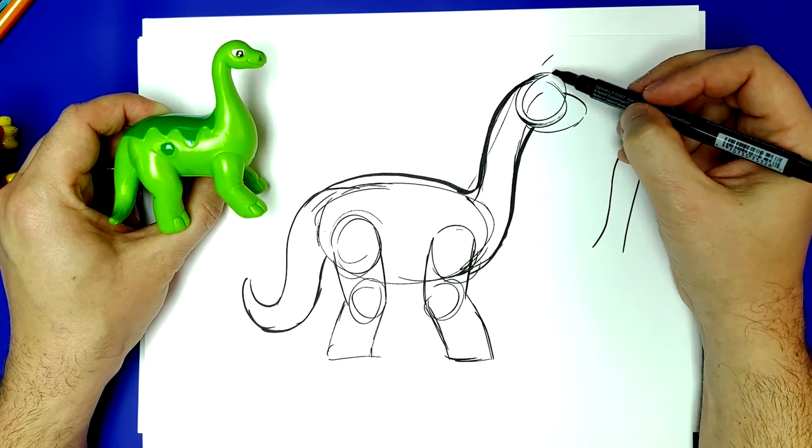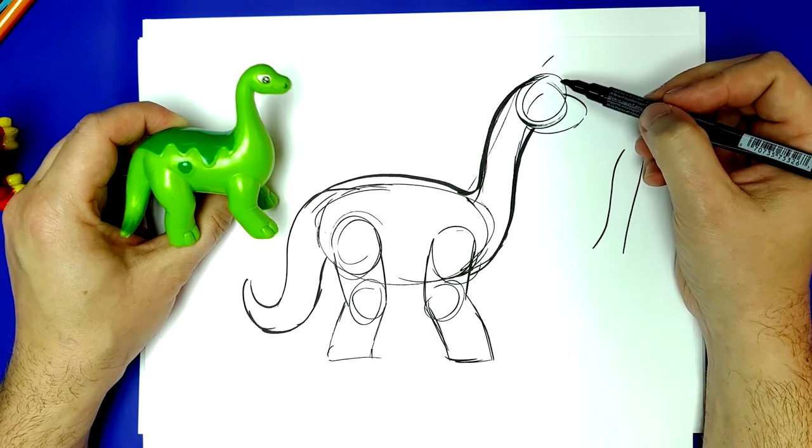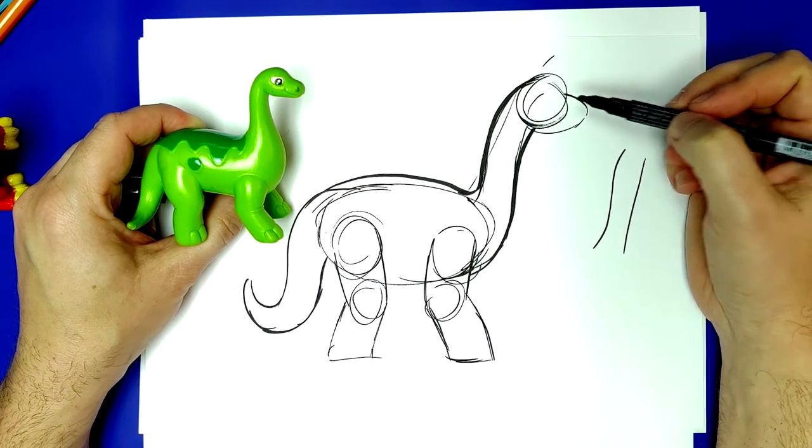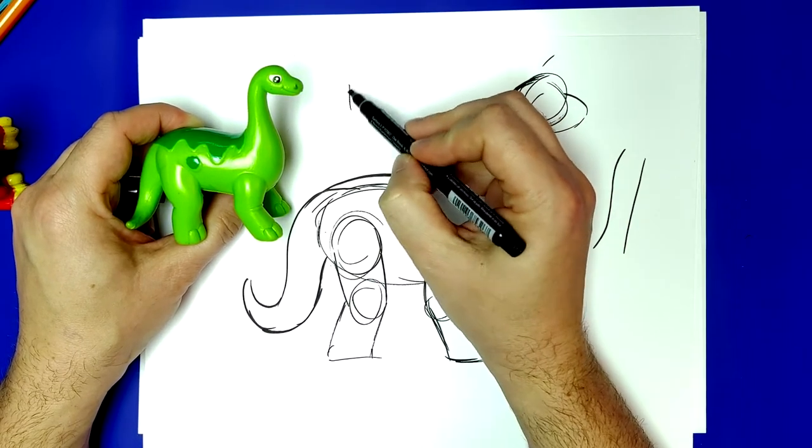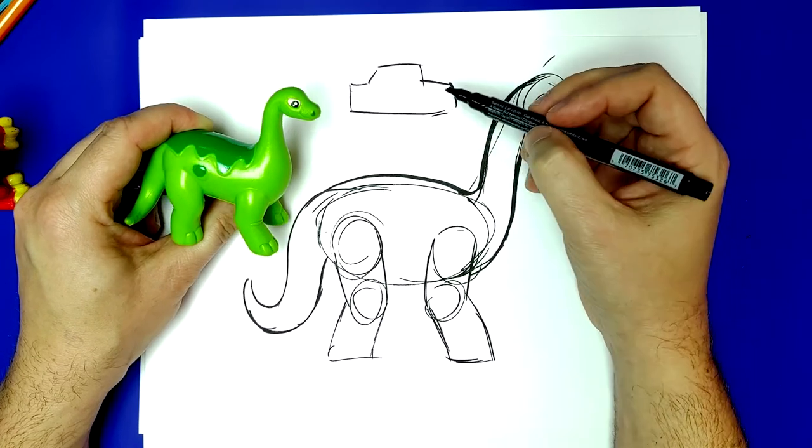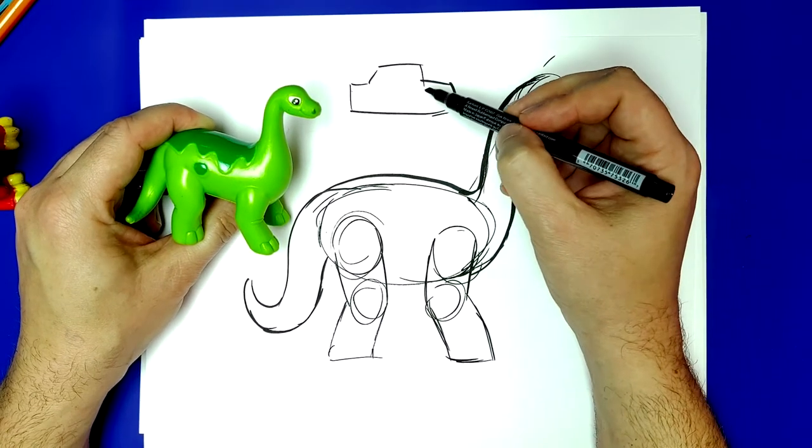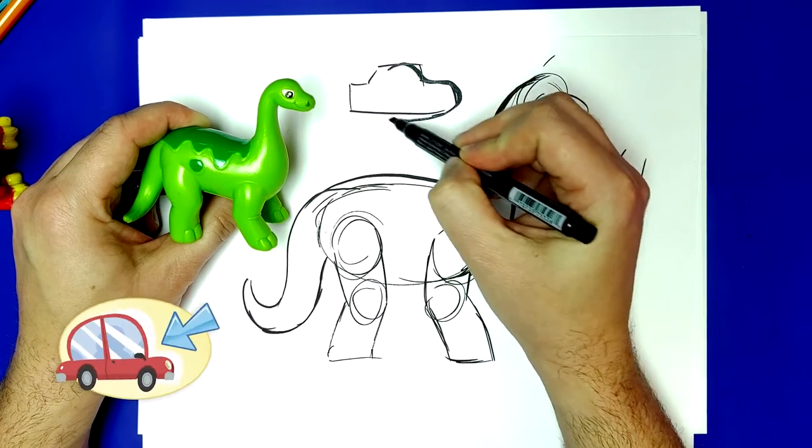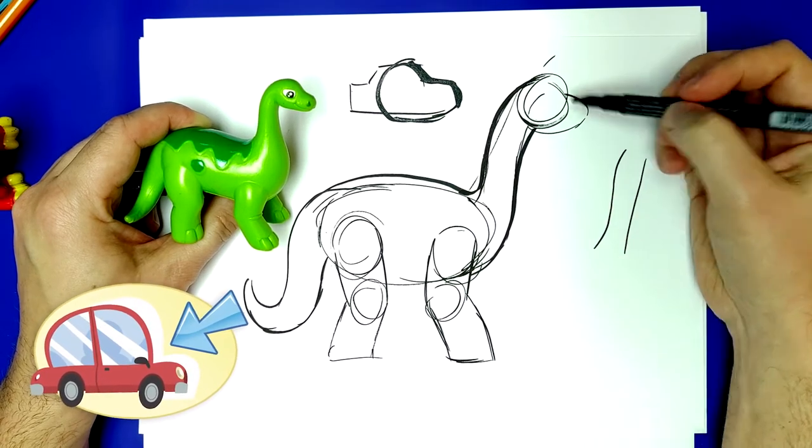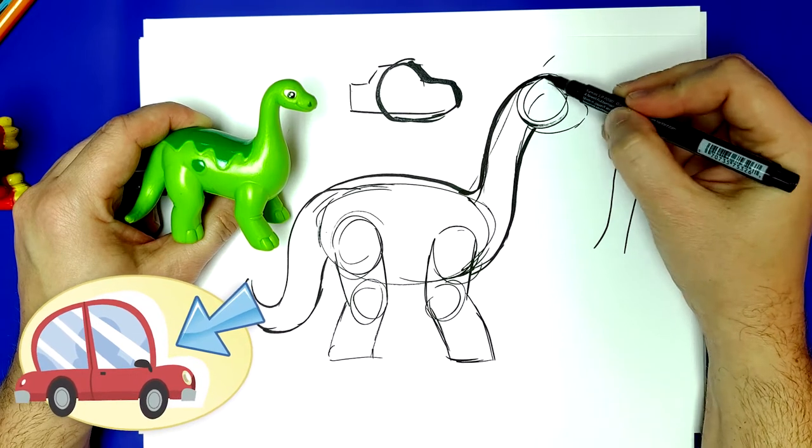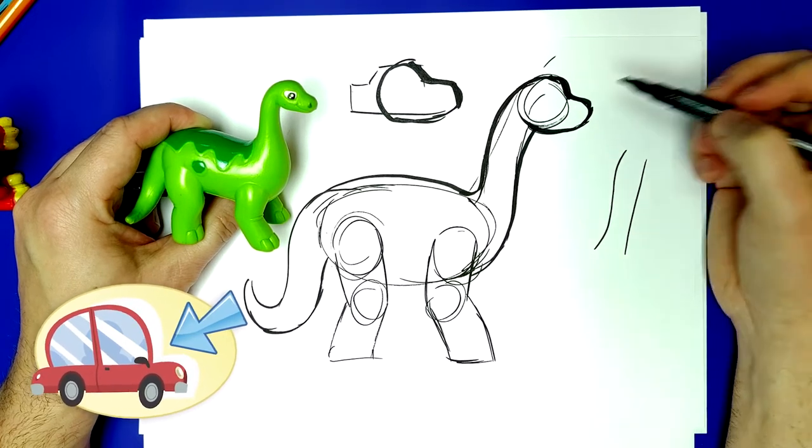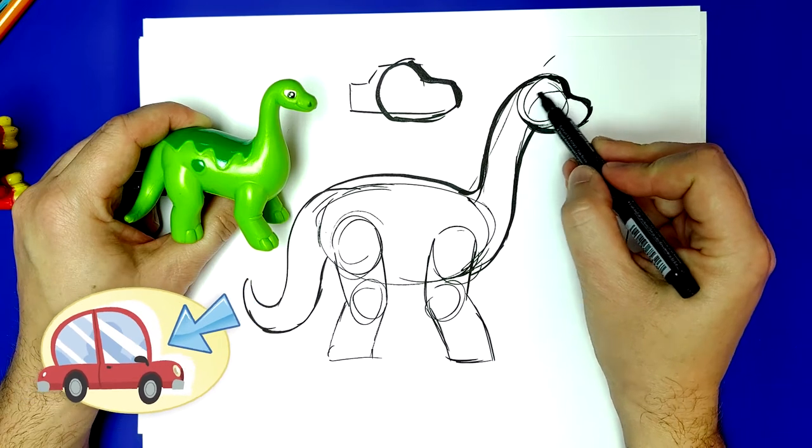Alright, now let's look at this head. This is a shape that you're going to need to get used to a lot. And we'll talk more about it in a later video. But I've always thought of it as a car shape. If you look at a car... Okay, there's your car. Well, a lot of animals, especially dinosaurs, have a shape that's very similar to this right there. And I call it a car shape because it kind of looks like the windshield, the hood, and the front end of a car, okay?